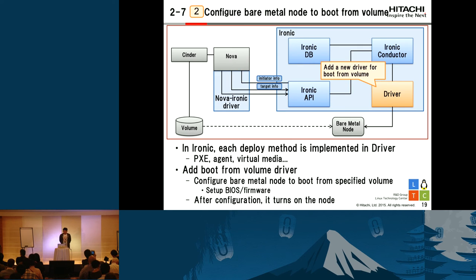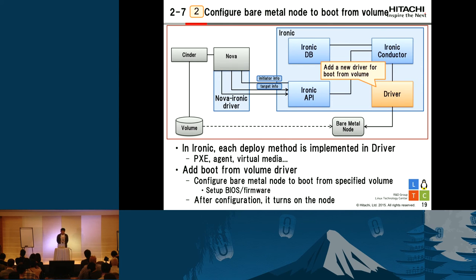The second function is configuring the bare metal node to boot from volume. In Ironic, each deploy method is implemented as a driver — for example, the PXE driver, agent driver, and virtual media driver. So we add a boot from volume driver that configures the bare metal node to boot from a specified volume. It needs to control the BIOS or firmware. After the configuration, this driver turns on the node.